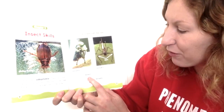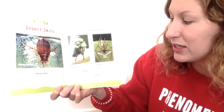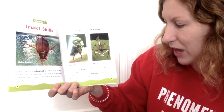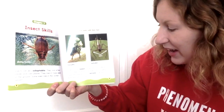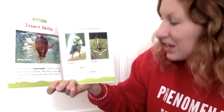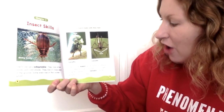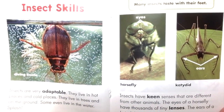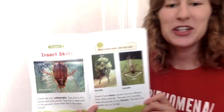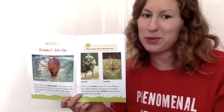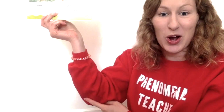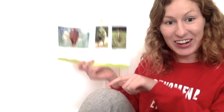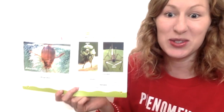Insects have keen senses that are different from other animals. The eyes of a horsefly have thousands of tiny lenses. The ears of a katydid are on its legs. Imagine for a second what it would be like if your ears were on your legs or on your arms — if your ear was on your knee or on your elbow. That would be so weird.